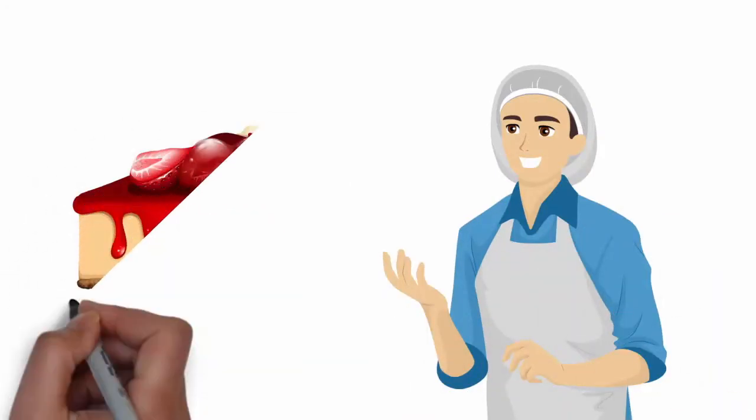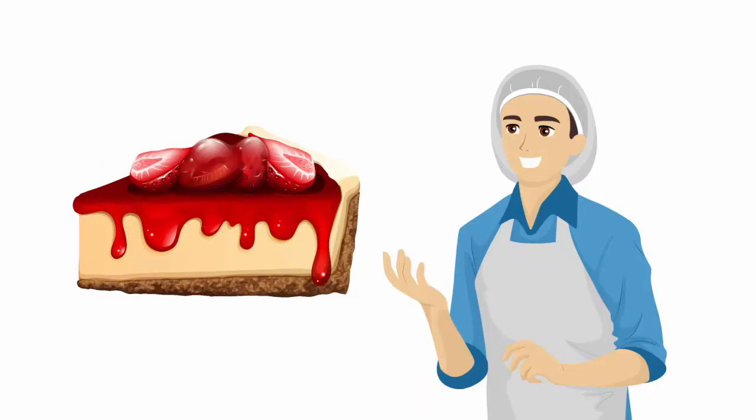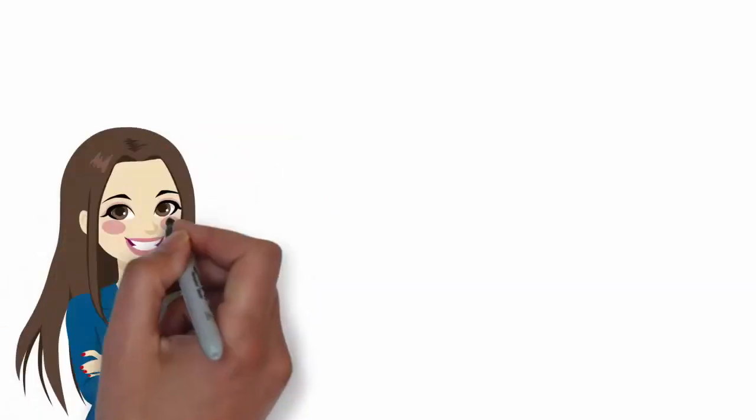Antonio makes awesome cheesecakes. He wants to share his baking skills with others, but has no idea where to start. See, Alice and Jim want to learn new skills, and Antonio wants to teach.